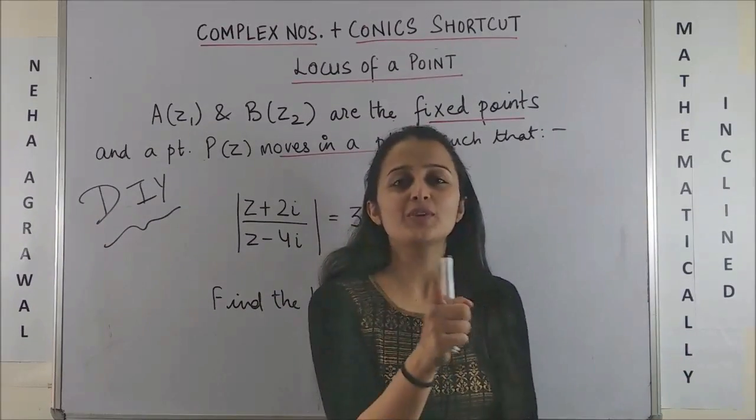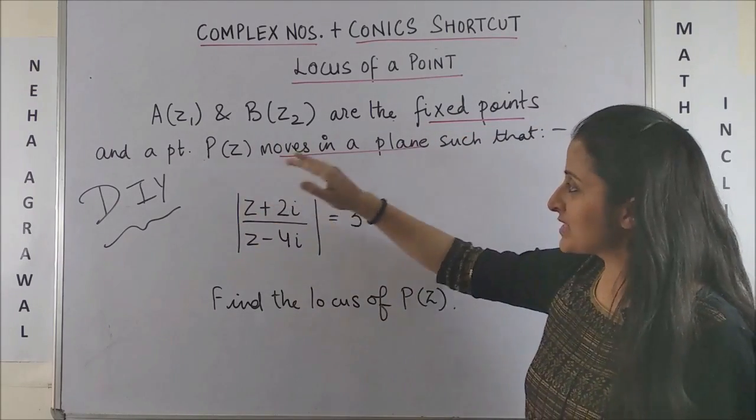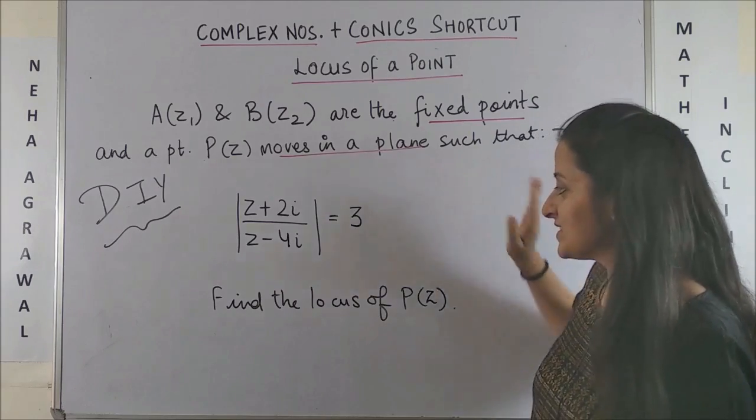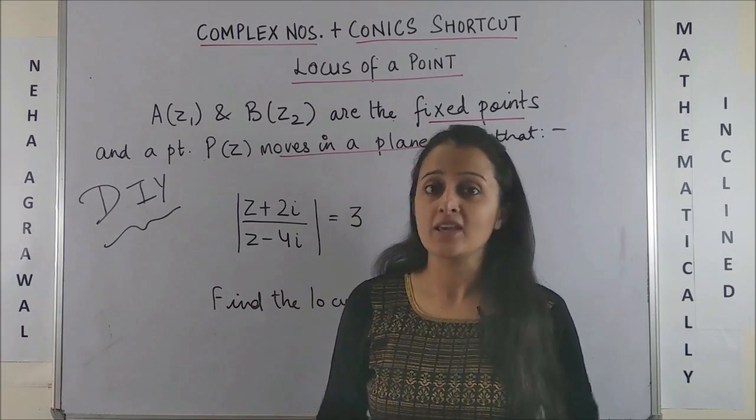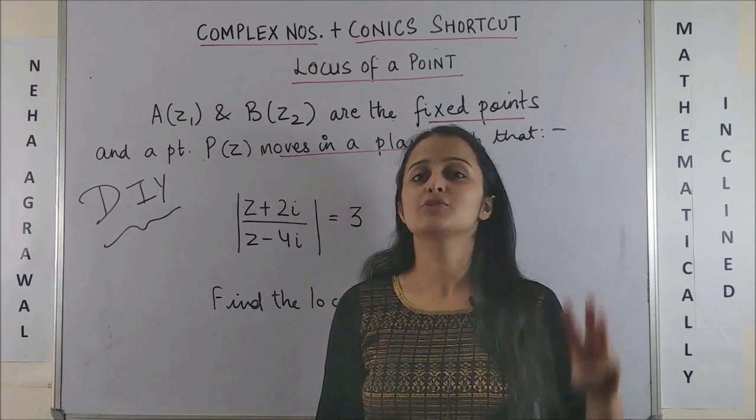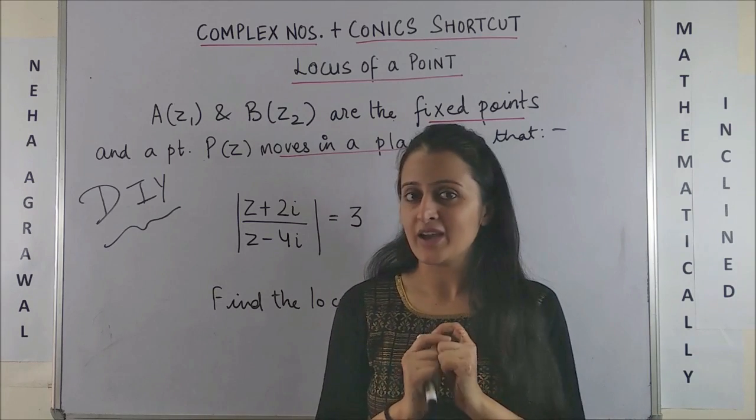It is time for your do it yourself. A and B are given to be the fixed points and a point P moves in a plane such that it satisfies this equation. You have to find the locus of P. Answer fast in the comments section below because you know the top 3 accurate answers always get named in my upcoming videos.